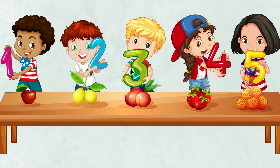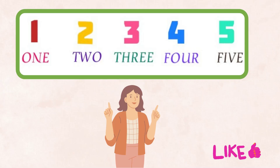By now we have learned our numbers 1 to 5. Let us quickly revise the number names. 1 — O-N-E. 2 — T-W-O. 3 — T-H-R-E-E. 4 — F-O-U-R. 5 — F-I-V-E.